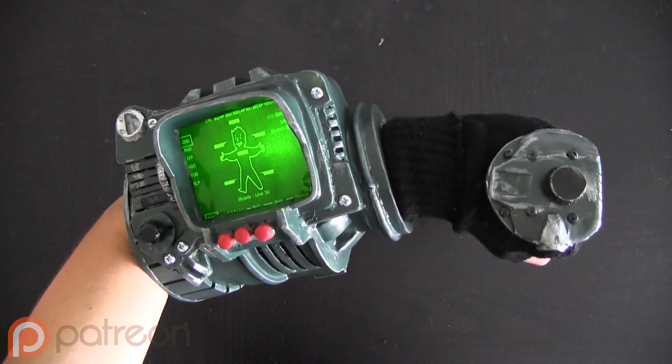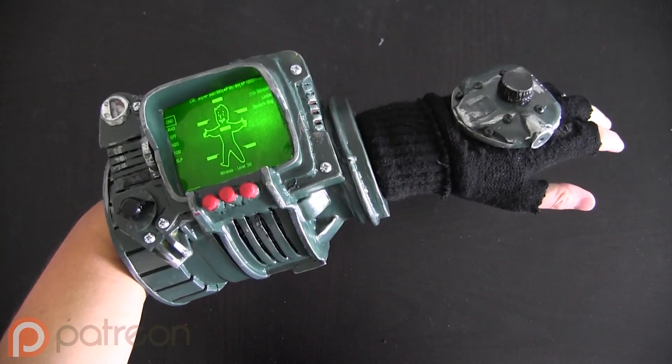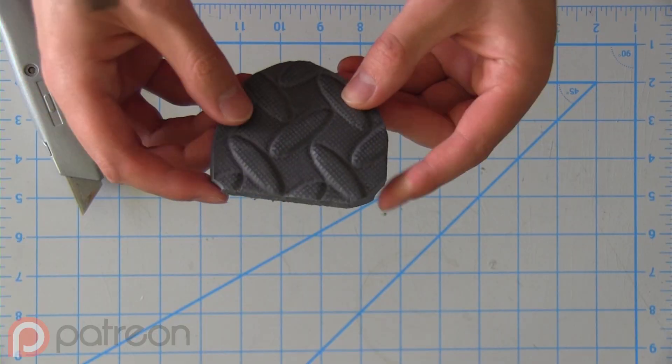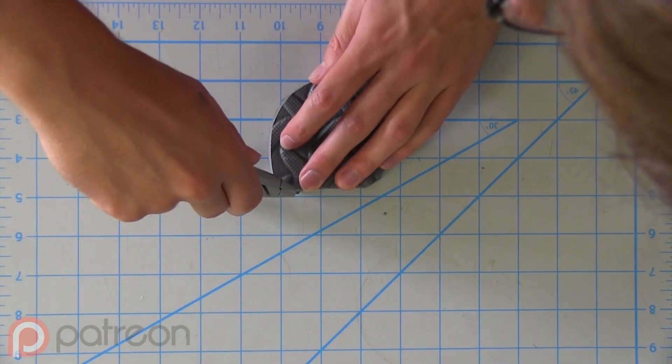So I just built the Pip-Boy 3000 from Fallout, and I wasn't able to finish the hand-mounted controller knob in time for the main tutorial, but it was really bothering me that I didn't include that. So I just went ahead and threw it together last night. Here's a mini tutorial.